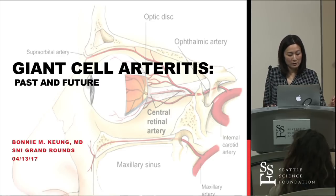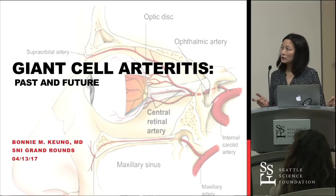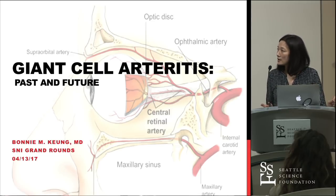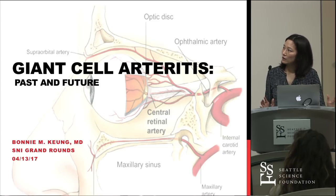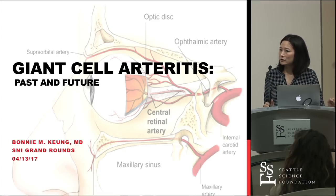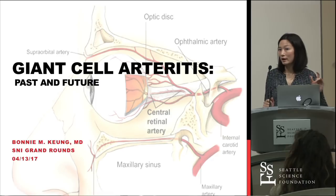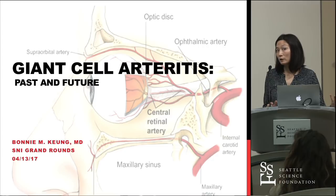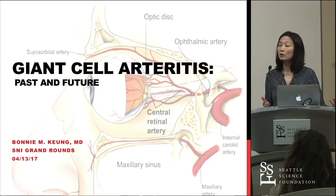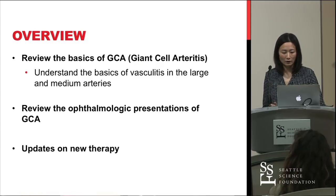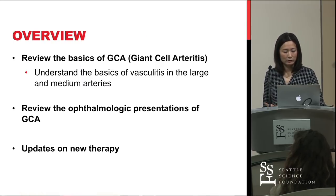If the underlying vasculitis is recognized, the vision loss can be reversible, and you can also prevent the fellow eye from being affected. One comment about nomenclature: I originally named this talk 'temporal arteritis,' but in the rheumatology world it has lost popularity because not every patient with giant cell arteritis has a temporal artery involved, and sometimes the temporal artery can be involved but it's not giant cell arteritis — it could be something else like a Wegener's vasculitis.